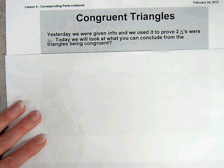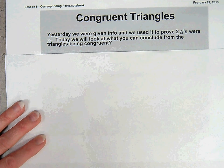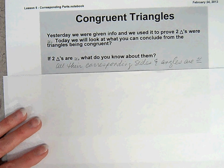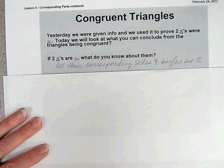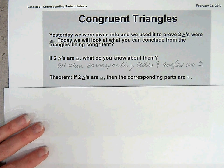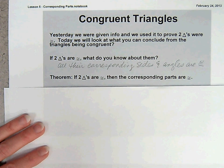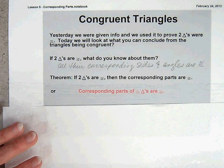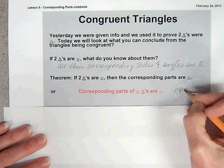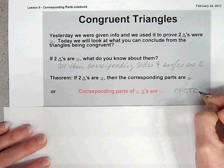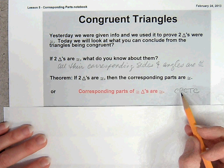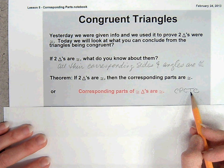So if we know that two triangles are congruent, what do we know about their parts? Well, all of their corresponding sides and all their corresponding angles are congruent. And that's actually a theorem we can use: if two triangles are congruent, then their corresponding parts are congruent. We also say that as corresponding parts of congruent triangles are congruent, or CPCTC. You can use that as an abbreviation.